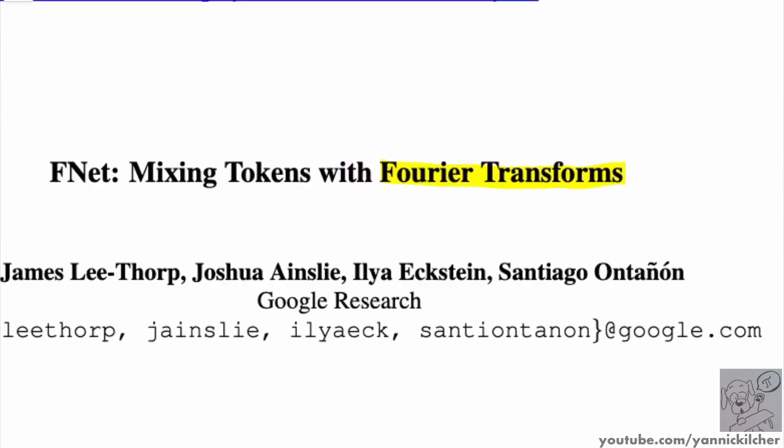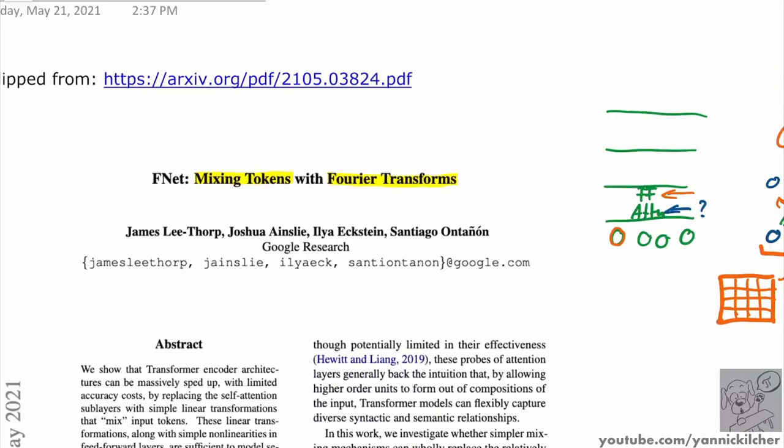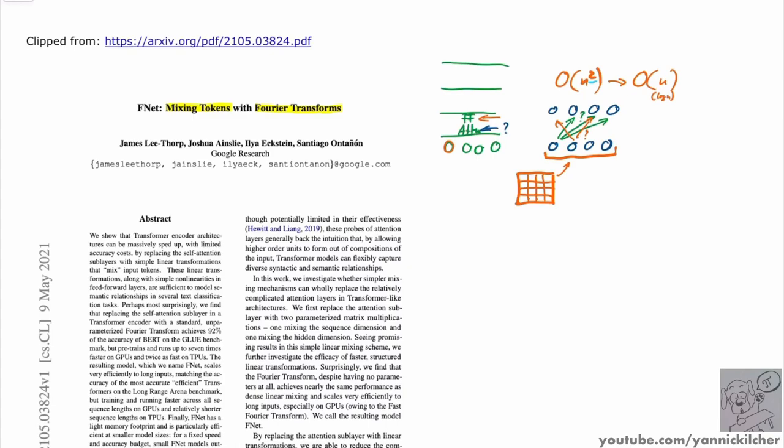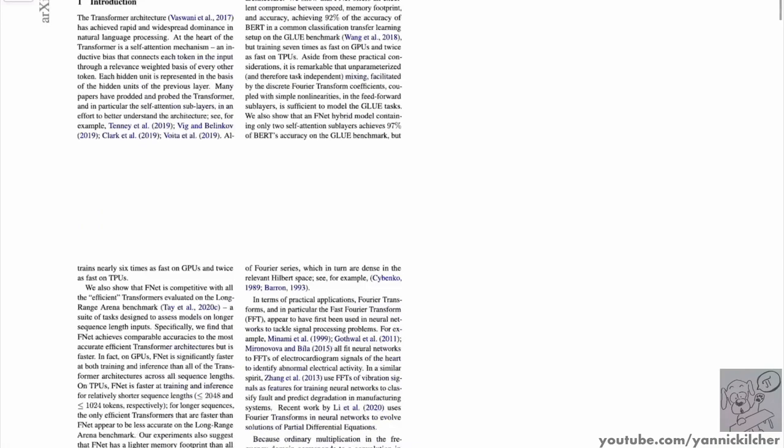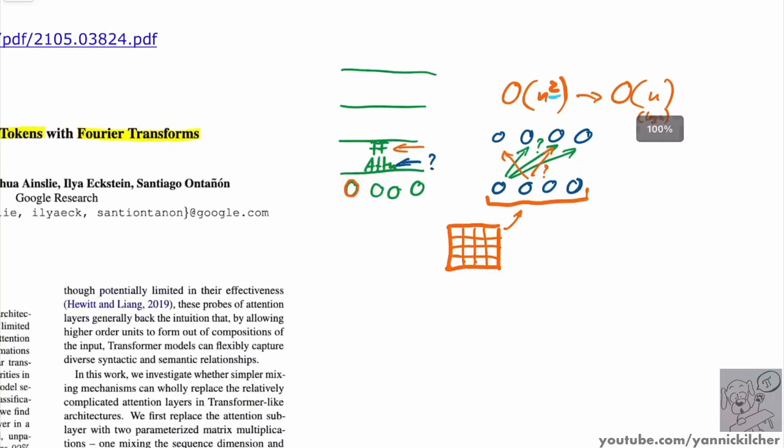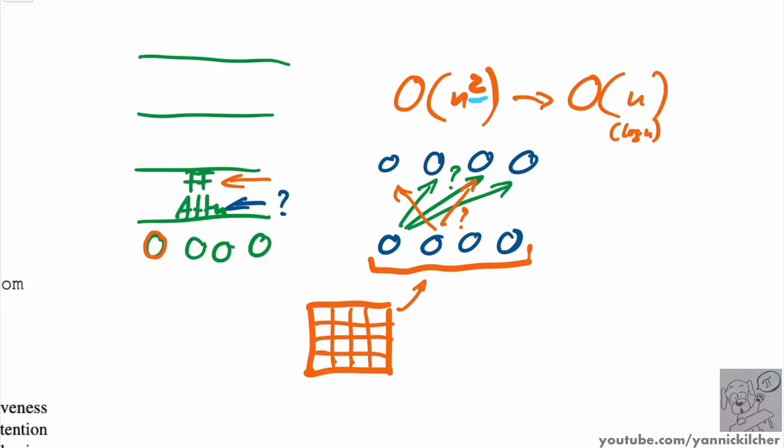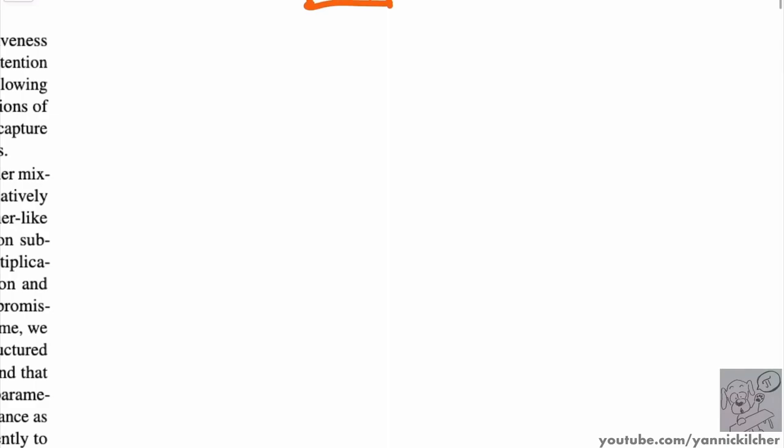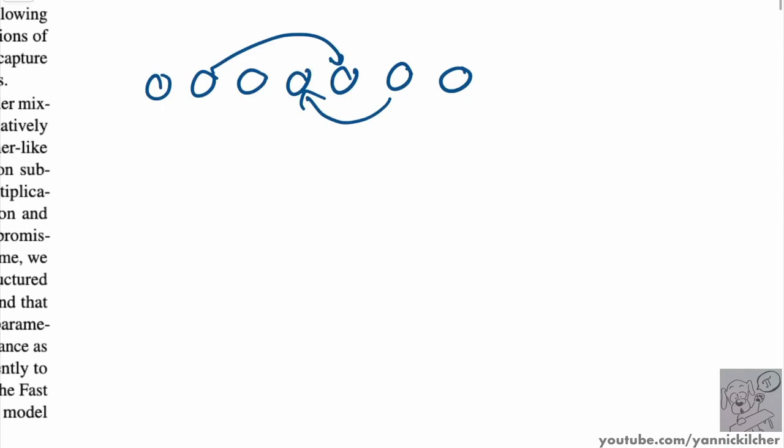Now, why might this work? And the second part of the paper that we haven't really looked at yet is what they call mixing tokens. And they make an emphasis on this. And I think it's really smart. So this paper isn't about the Fourier transform - it is not advocating that the Fourier transform as such is in any way special. Rather, I think what they advocate for is that the mixing of tokens is special. So the mixing of information between the tokens. Now, what do we mean? So if you have a sequence, any sort of sequence, and you want to do computation with that sequence, if you want to understand the whole sequence, at some point information needs to flow between the elements of the sequence.